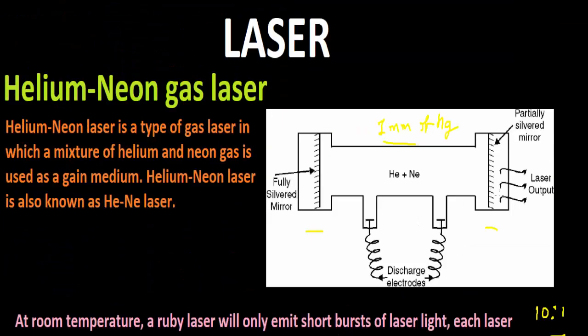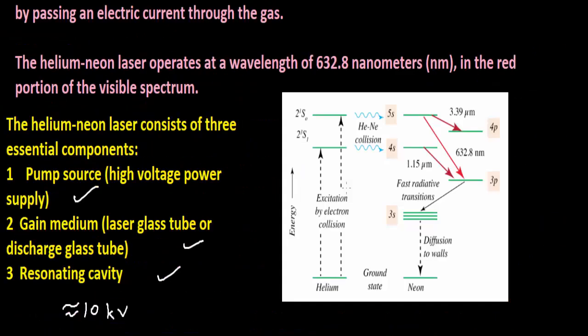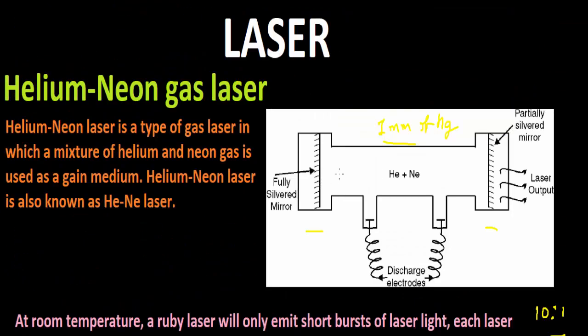This is a basic diagram of it. Now we will see the action or working of the laser. When an electric discharge of around 10 kilovolts is passed through the gas mixture, the helium atoms are excited by the impacts of the accelerated electrons in the discharge tube for its less mass in comparison to the neon atom.